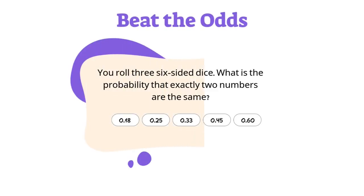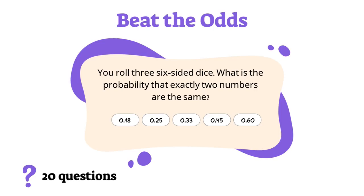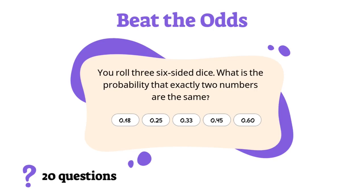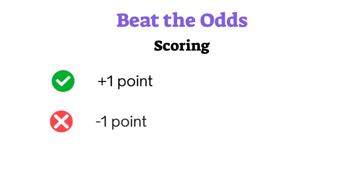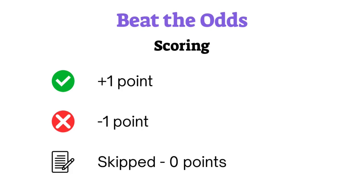The next test is called Beat the Odds. Here you need to face 20 questions about probability theory with 90 seconds per question. The rules are similar to those on the number logic test: one point for a correct answer, minus one point for a wrong one, zero points for a skipped question.